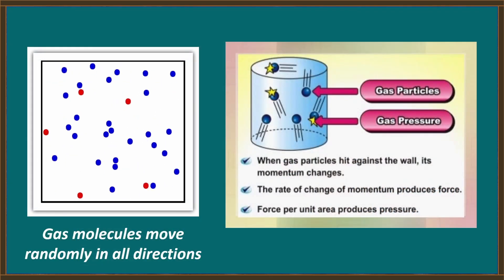Now we know that gas molecules move around randomly in all directions, and they bounce off surfaces. And if we put them inside a sealed container, they bounce off all of the walls of the container. But when those gas molecules hit the wall, their momentum changes. And the rate of change of momentum produces a force, and that force per unit area is what we call gas pressure.